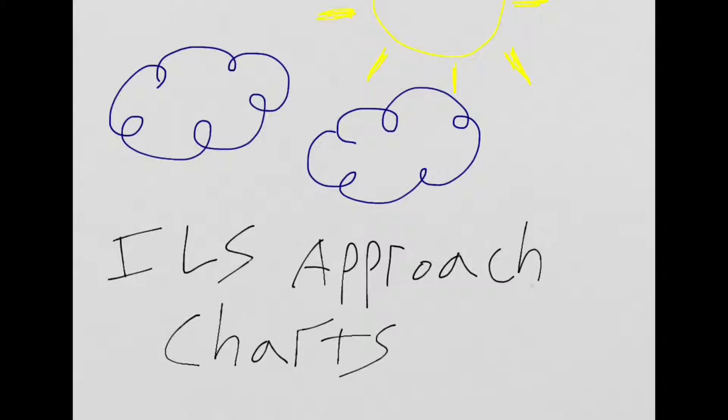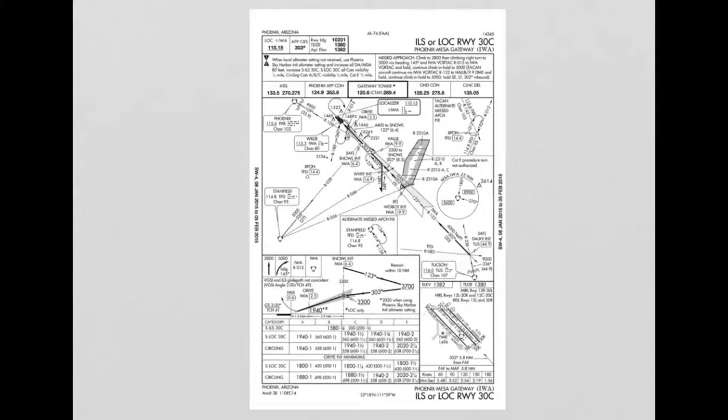This video covers ILS approach charts. We're looking at the ILS and Localizer Runway 30 Center into Phoenix Mesa Gateway Airport. I'm going to go into a little bit of the details just to get some things cleared up about this approach chart.